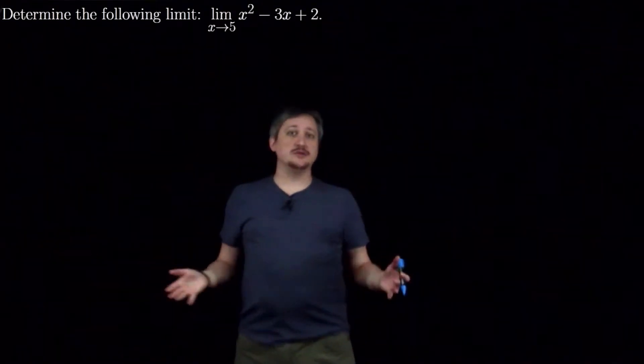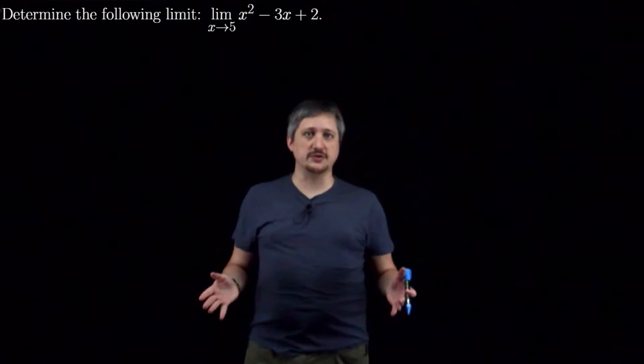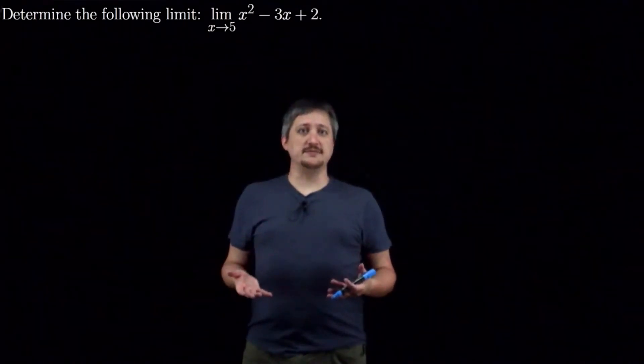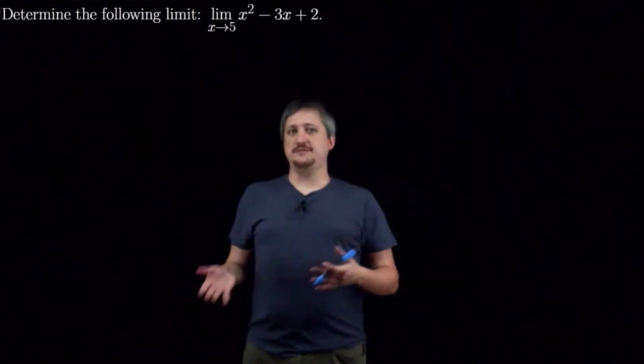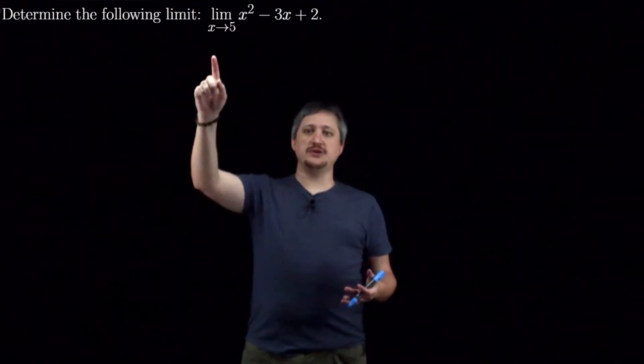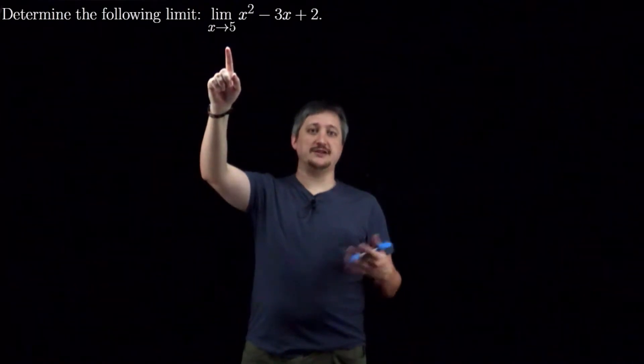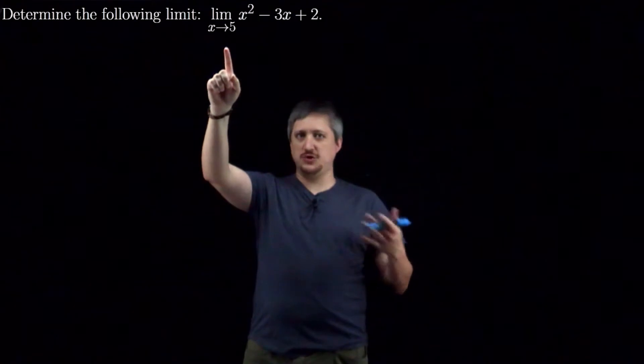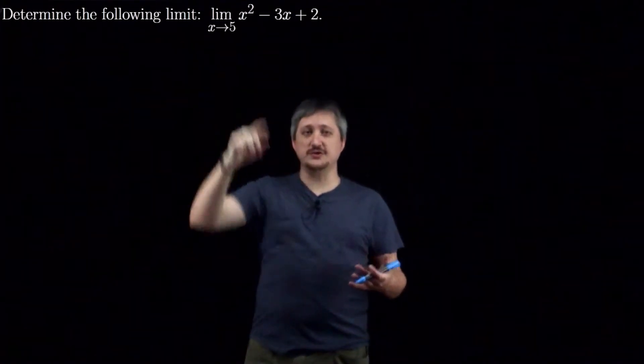Polynomials are defined over all the real numbers and they're continuous over all the real numbers. And one of those properties we have for limits is that if we're taking the limit of a continuous function, then the point that we're going to, this x equals or x approaching 5,